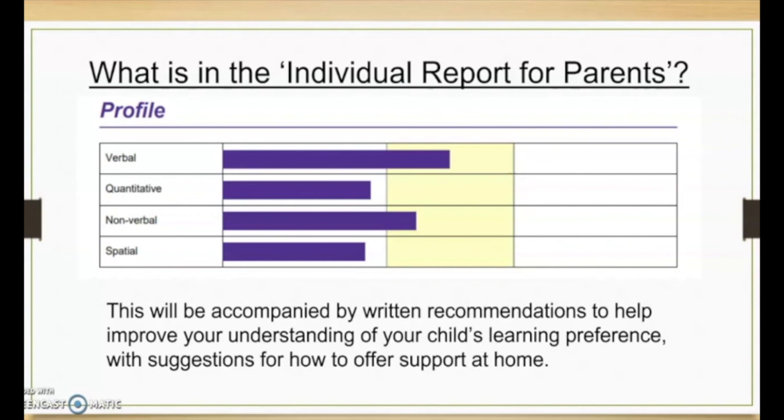Okay so in the individual report for parents as well, just the last sentence at the bottom I'll read: this will be accompanied by written recommendations to help improve your understanding of your child's learning preference with suggestions for how to offer support at home. And this is really important I think to have a look at these because it's very practical advice and things that you can do at home to support your child and their learning at home. As I said, we as teachers receive a report as well with specific recommendations on how to best support your child in their abilities.